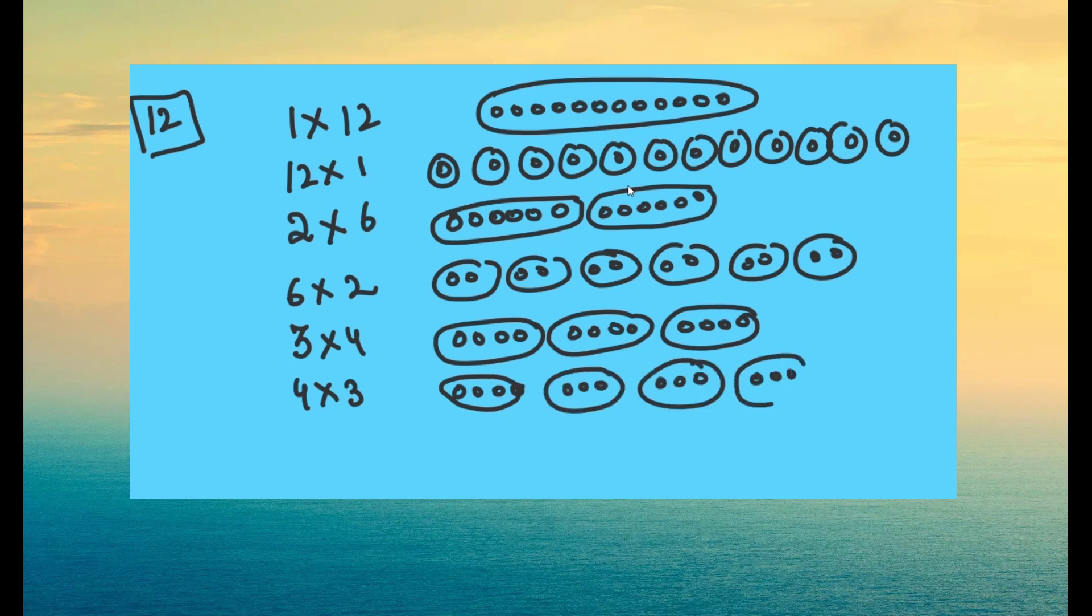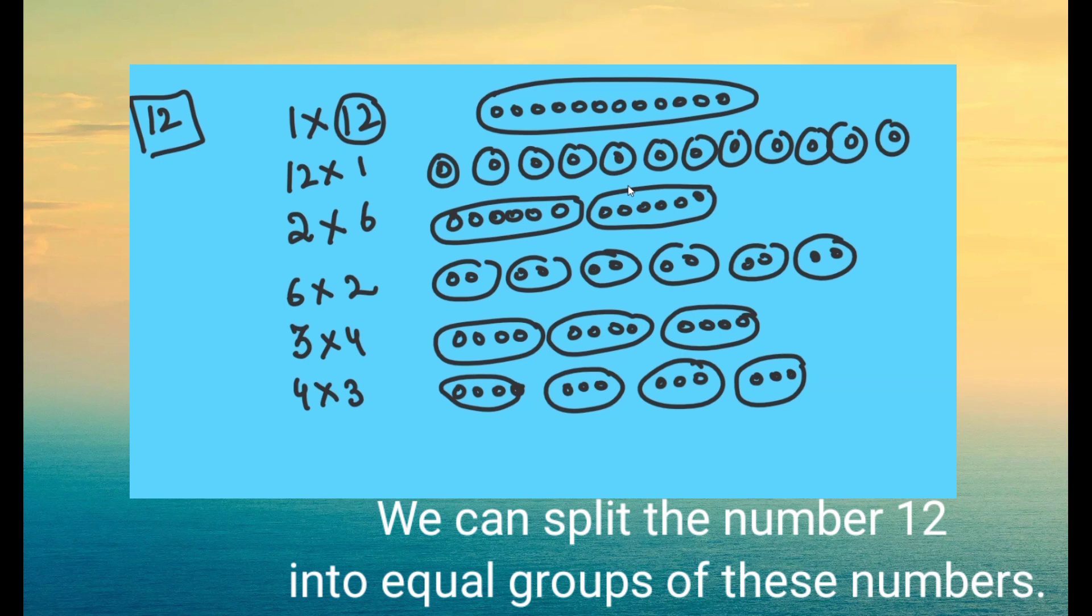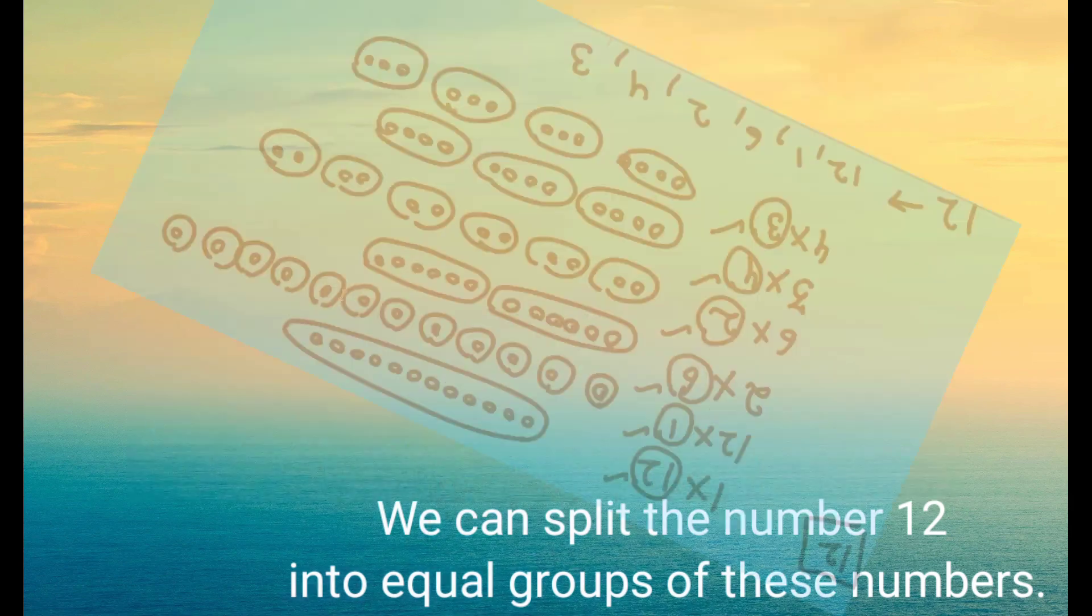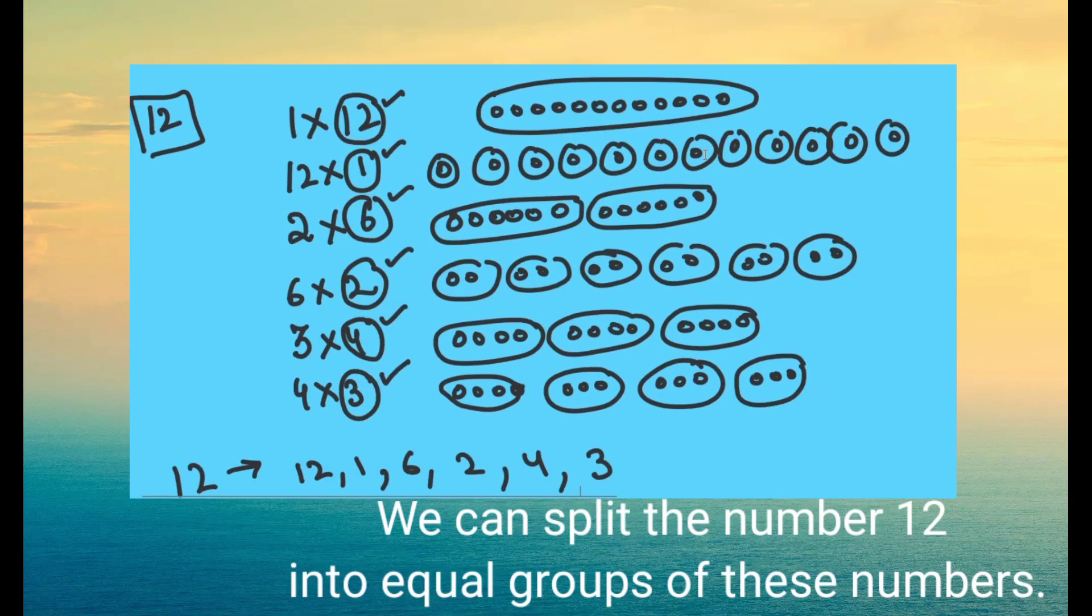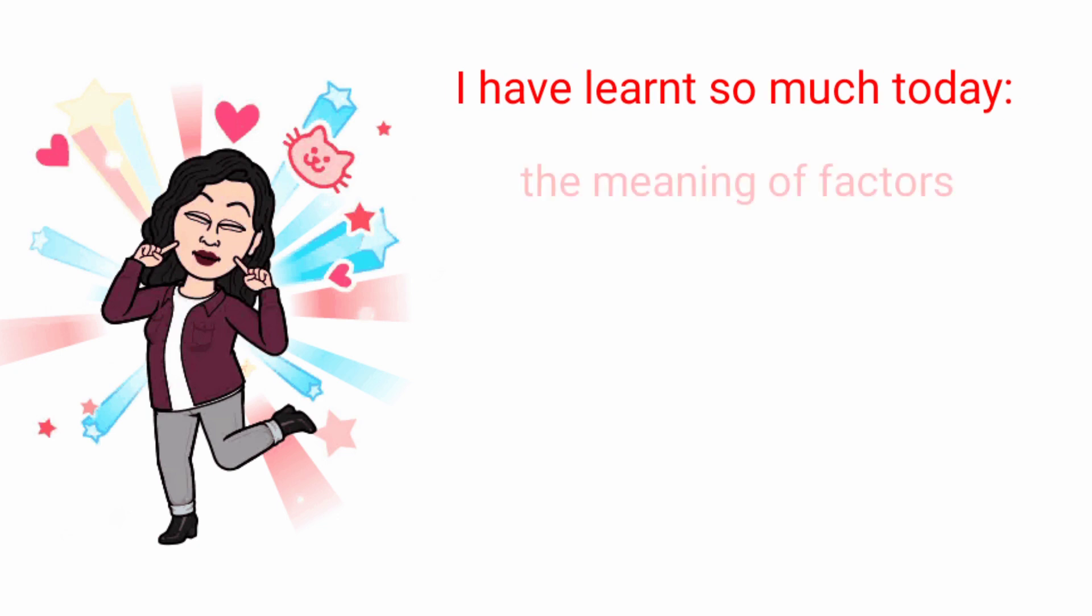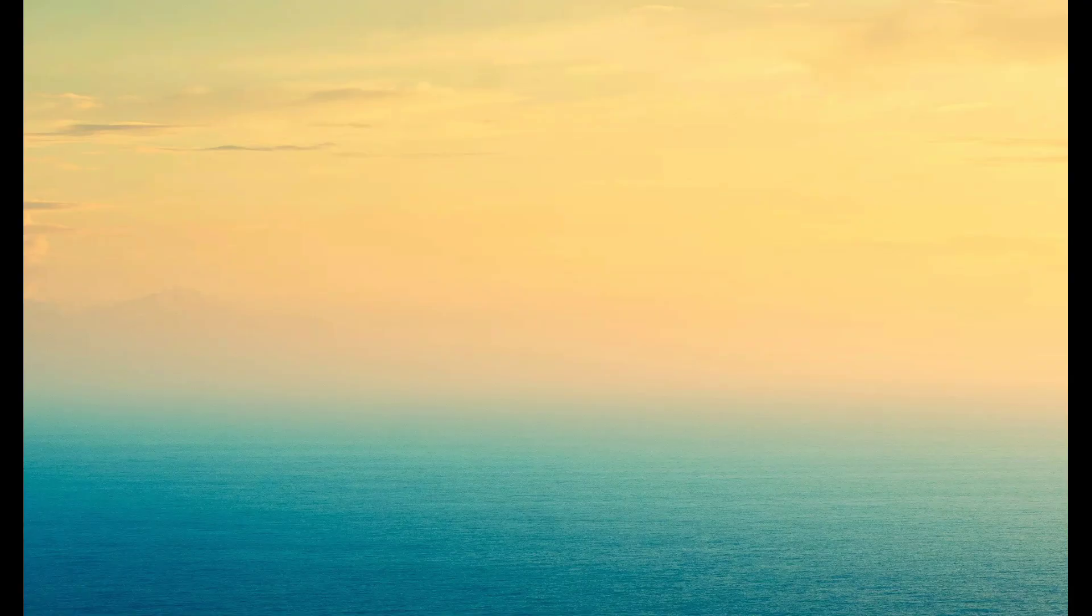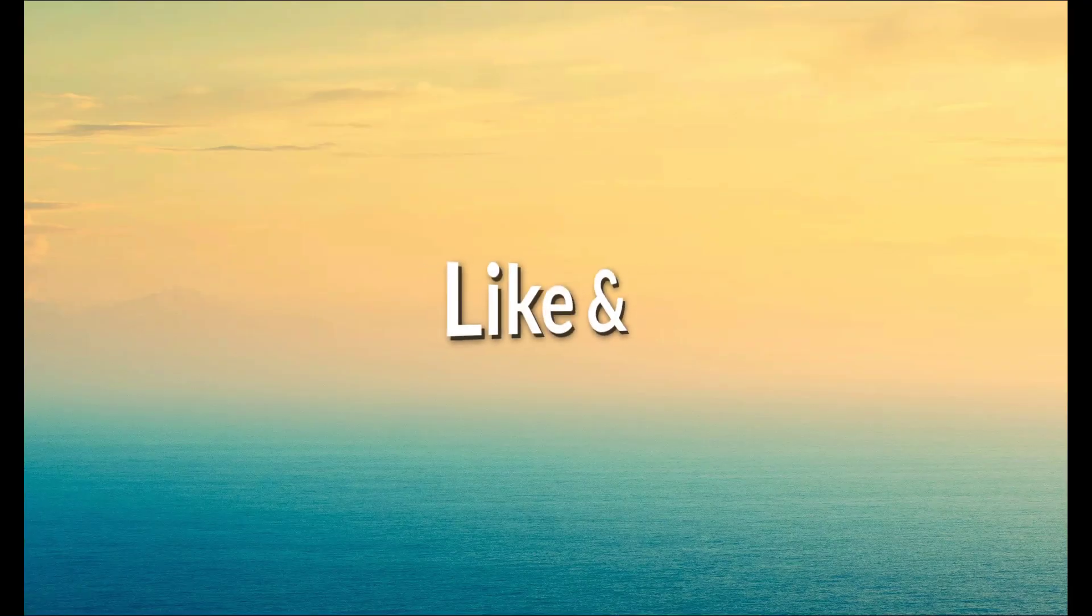Now you can see we have splitted the number twelve into equal groups. Of twelve which is one group, groups of one which are twelve in number, groups of six, groups of two, groups of four, groups of three. So all these numbers are called factors of twelve. So what are the factors of twelve? Twelve, one, six, two, four and three. These are the factors of twelve.